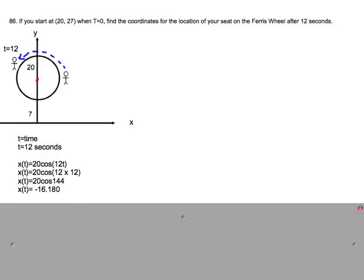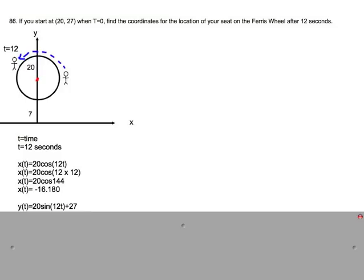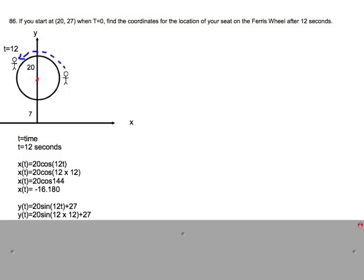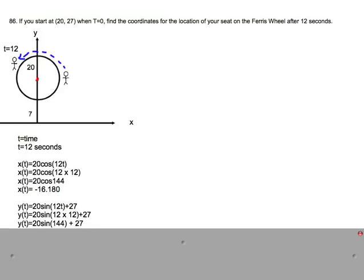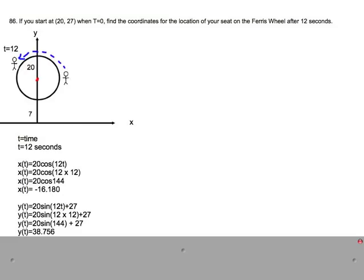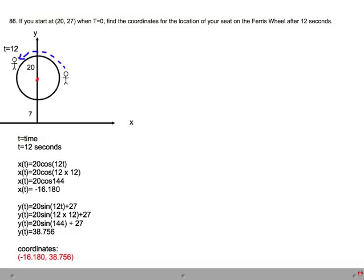Now we do the same thing for the Y equation where Y equals 20 sine 12t plus 27. We plug in the 12 for the 12 seconds and we get that the Y coordinate is 38.756. So now our coordinates are negative 16.180 and 38.756.